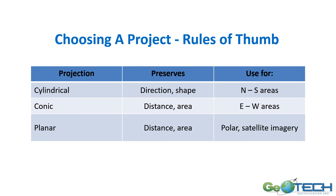One important thing when doing analysis is understanding which map projection is best for your application. This is a rule of thumb: the three projection types are cylindrical, conic, and planar. For cylindrical, direction and shape are best preserved; for conic, distance and area; and for planar, distance and area.